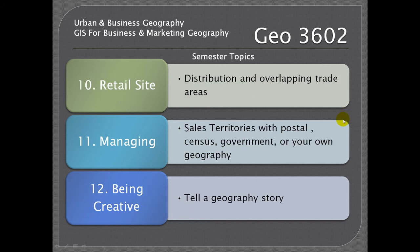Ten is retail site selection. We'll look at the distribution of retail places and how their trade areas may overlap, solving for a proper distribution of multi-branch retailers. Eleven is management of sales territories, using postal geography, census geography, government geography, and even creating your own geography.